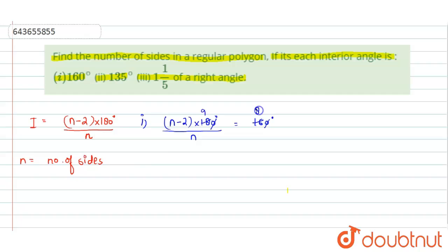We will get (n minus 2) into 9 equals to, and we can take this n to the RHS and this will be 8n. Finally we will get 9n minus 18 equals to 8n and this will give us n is equal to 18.